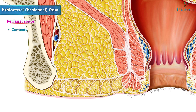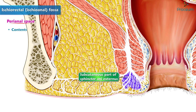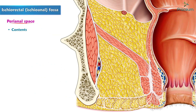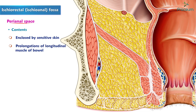Contents of the perianal space include the subcutaneous part of the sphincter ani externus muscle, the external hemorrhoidal venous plexus, and fat. It is enclosed by sensitive skin and prolongations of the longitudinal muscle of the bowel.